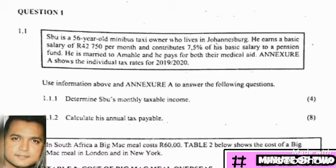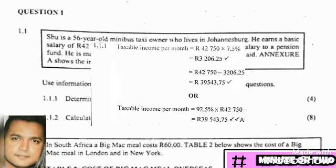Remember that Paper 2 generally has level 3 and 4 type questions, so there is a little bit of extra thinking involved in approaching these questions and your answers. It is also important that you take time to read the instructions at the beginning of the paper, as this will give you more information on how to present your final answers — for instance, rounding off.